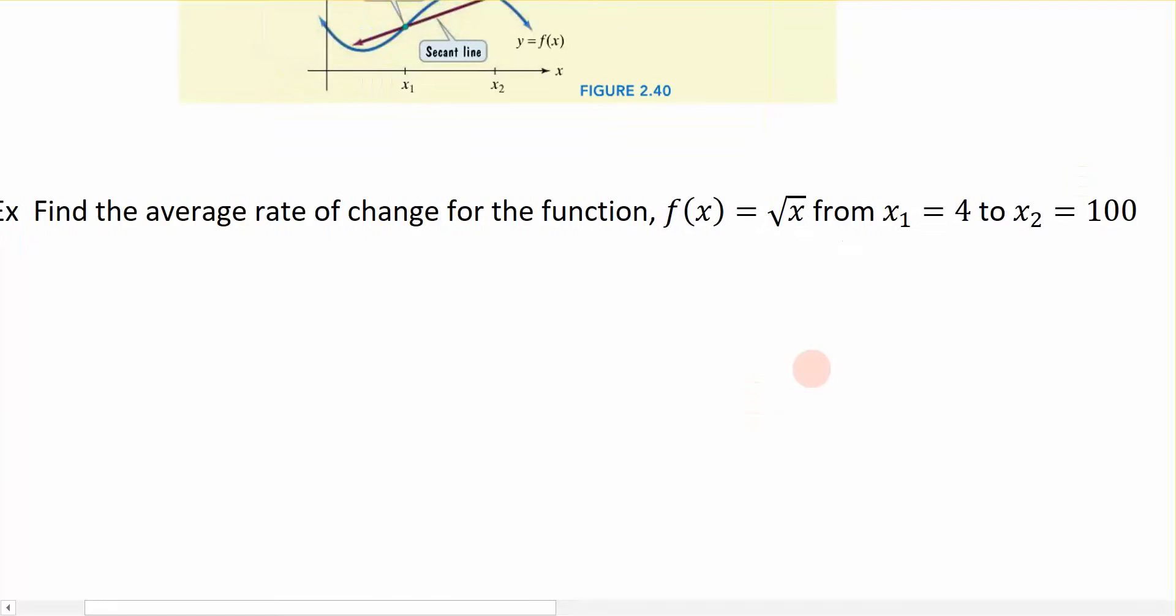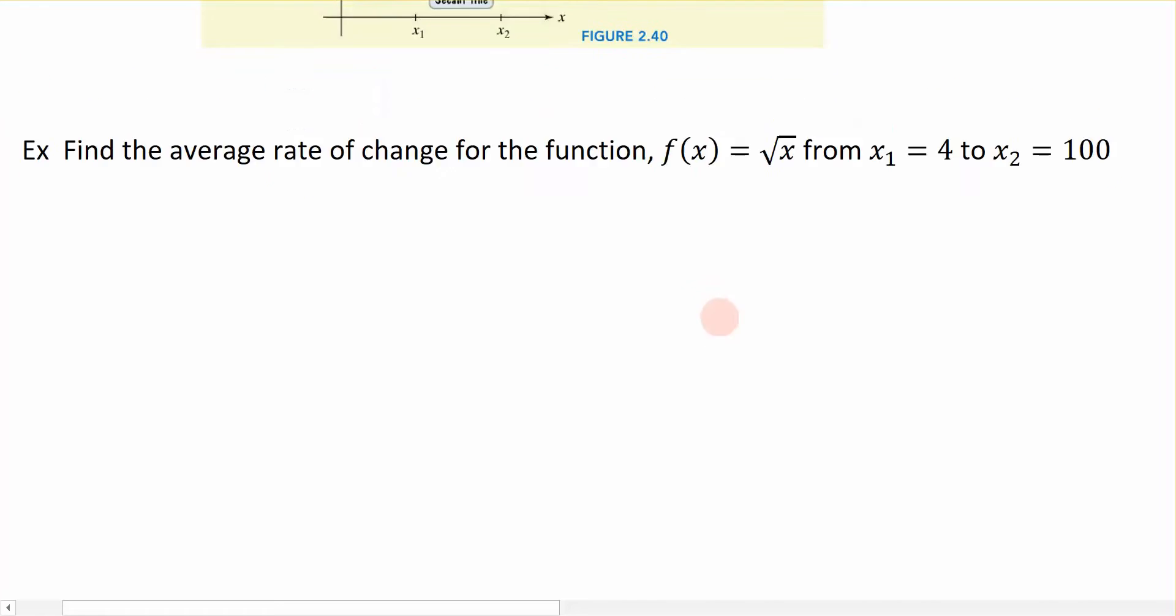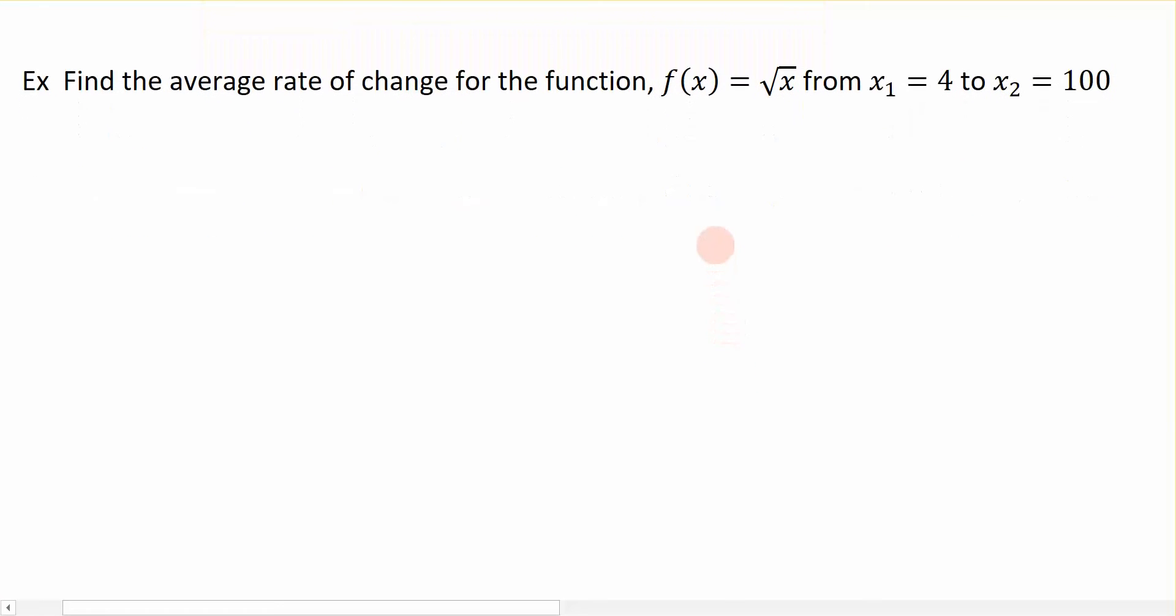This question says, I would like to find the average rate of change for the function f(x) is equal to the square root of x, and I'm going from x1 is equal to 4 to x2 is equal to 100. So that's a lot of words in there, and how do I apply it? Well, the average rate of change, like I've already said, is the function evaluated at x2 minus the function evaluated at x1, all of that divided by x2 minus x1, the slope, right?